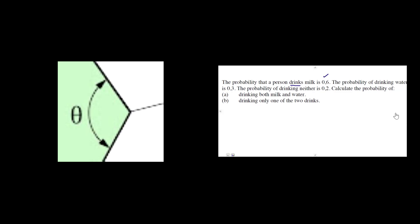We are already given the probability. Then, the probability of drinking water of that same person is 0.3. The probability of drinking neither, meaning neither milk nor water, is 0.2. Not part of milk, not part of water, it's 0.2.